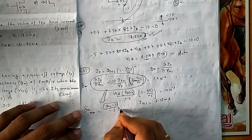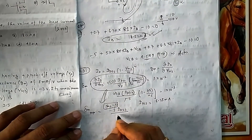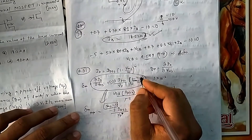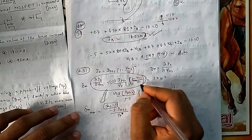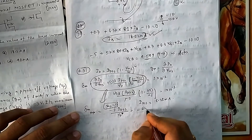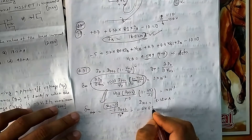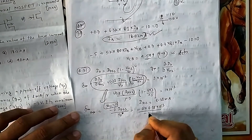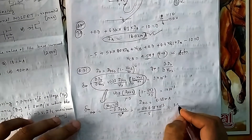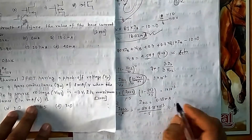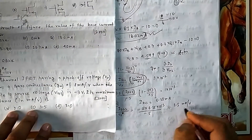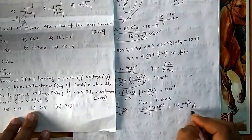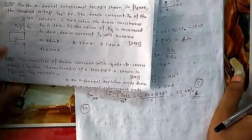Evaluating: g_m_max = 2 × 6.25×10⁻³ / 5 = 2.5 mA/V. This is option C.